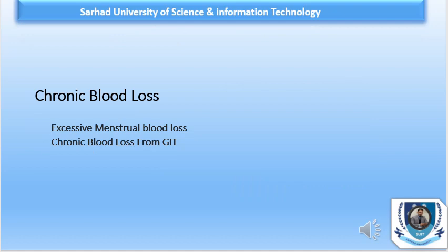Chronic blood loss may occur due to two different problems: excessive menstrual blood loss and chronic blood loss from the gastrointestinal tract. Excessive menstrual blood loss can be caused by hormonal imbalance, dysfunction of the ovaries, uterine fibroids, adenomyosis, intrauterine devices, complications in pregnancies, or certain cancers. Whenever blood is lost excessively, there may be an iron deficiency leading to iron deficiency anemia.